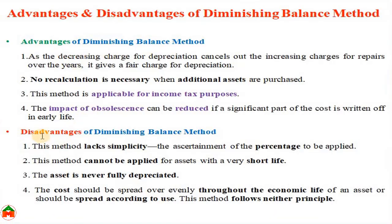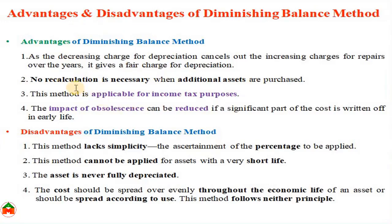Some advantages of the diminishing balance method: this method applies a fixed rate of depreciation, giving a fair charge. No recalculation is necessary when additional assets are acquired — unlike the straight line method, where a new asset requires recalculation. This method is applicable for income tax purposes, and the impact of obsolescence can be reduced since a significant part of the cost is written off in the early life of the asset.